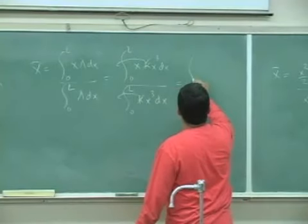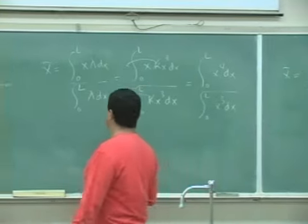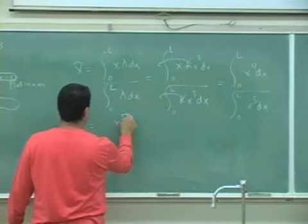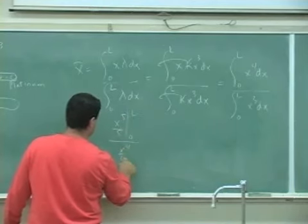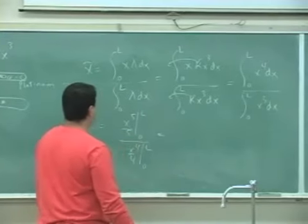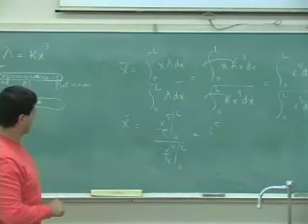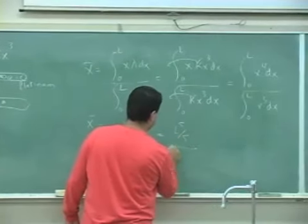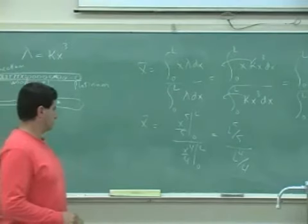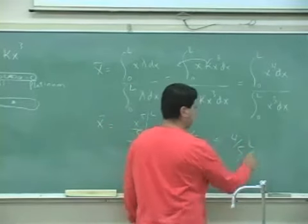Then integrate that. You have on top what? x to the fifth over 5, 0 to L, x to the fourth over 4, 0 to L. And then you put the L in, so you're going to have what? L5 over 5 divided by what? L to the fourth over 4. And that's equal to what? 4/5 L.